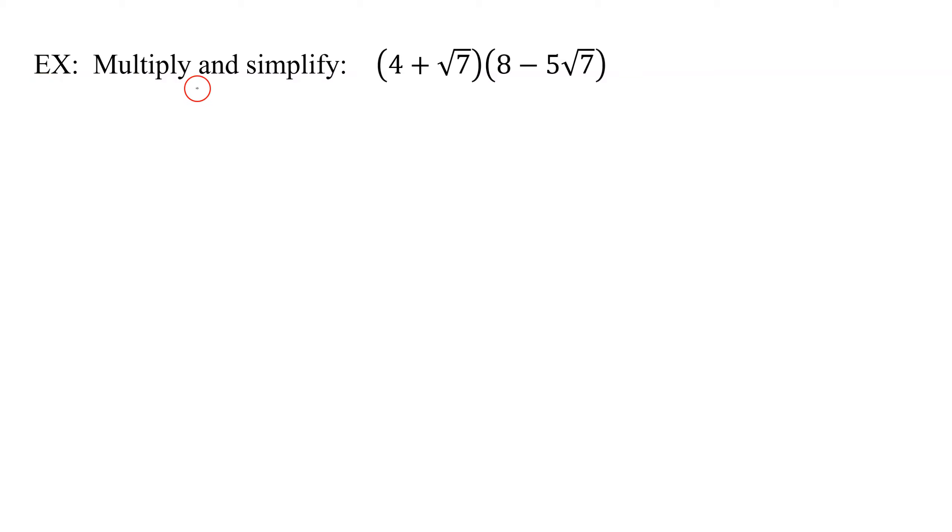In this example, we need to multiply and simplify when I have the quantity 4 plus the square root of 7 times the quantity 8 minus 5 the square root of 7. So when we see two binomials like this multiplied together, we're going to use the FOIL method.